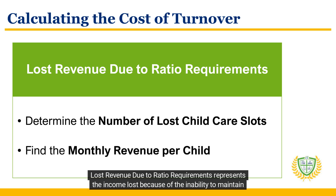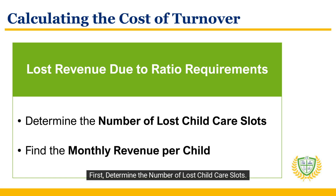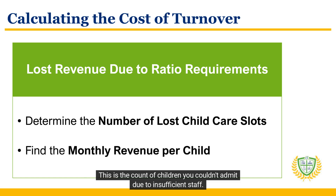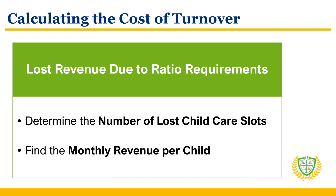Lost revenue due to ratio requirements represents the income lost because of the inability to maintain required child-to-caregiver ratios. First, determine the number of lost child care slots — this is the count of children you couldn't admit due to insufficient staff. Then, find the monthly revenue per child, which is the revenue generated per child each month.